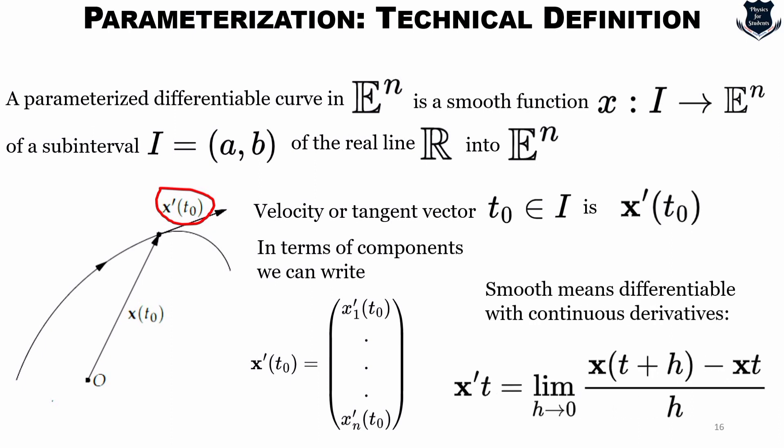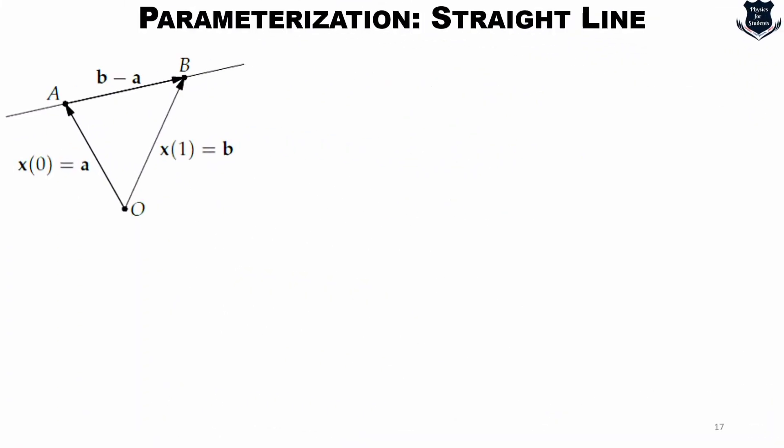Now remember that smooth means differentiable with continuous derivatives. So we take the quotient and it exists for every t as a member of I and that the function x'(t) is continuous. The fact, remember that we are differentiating a vector-valued function is of no concern. We are not dividing by a vector in the above quotient.